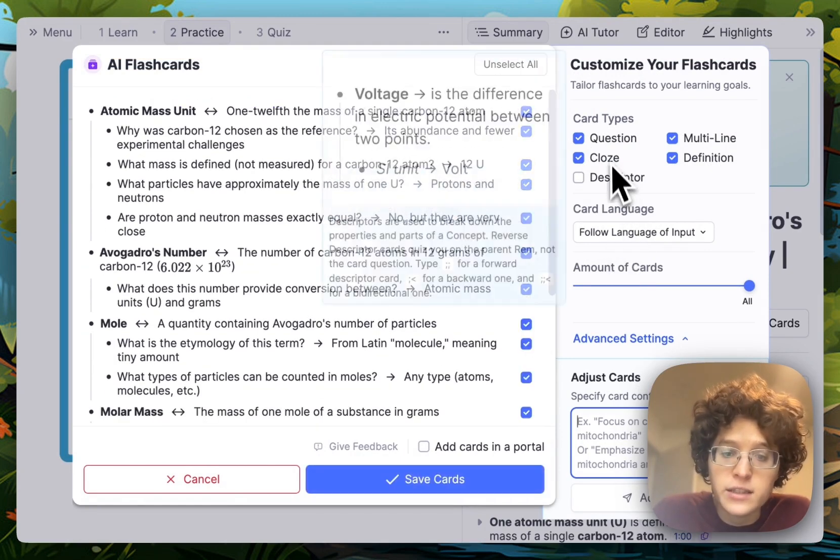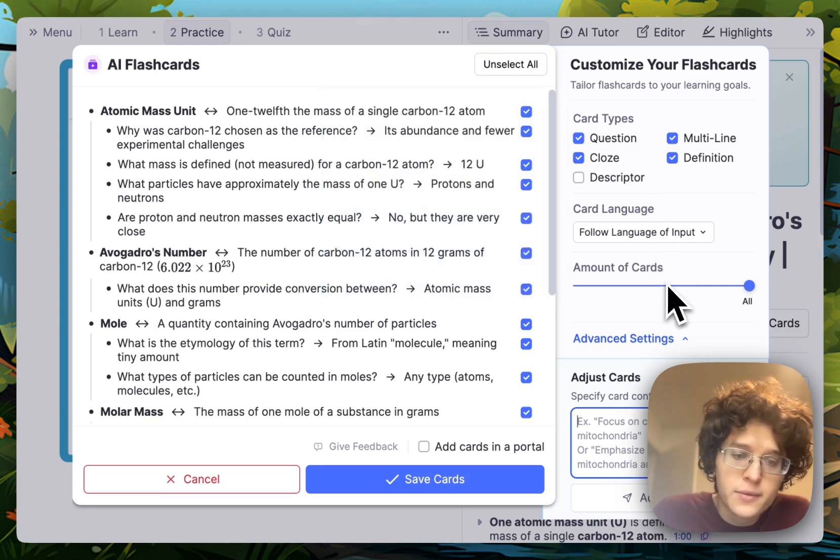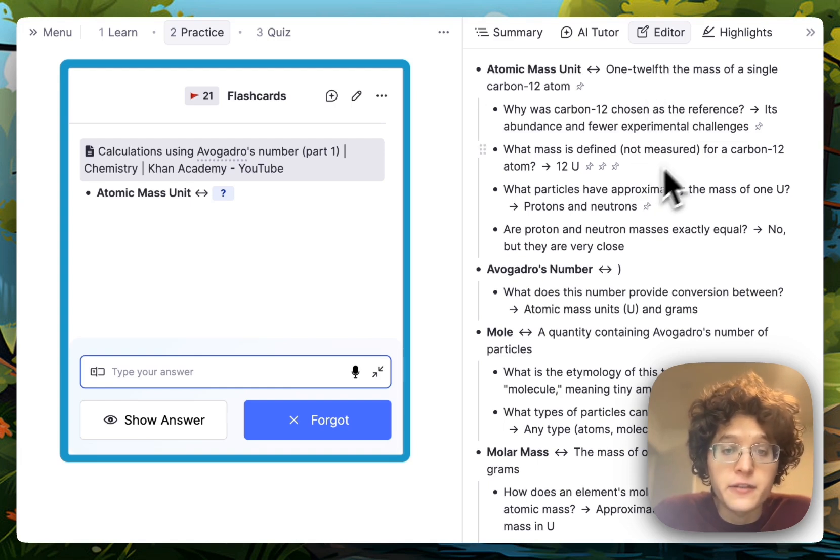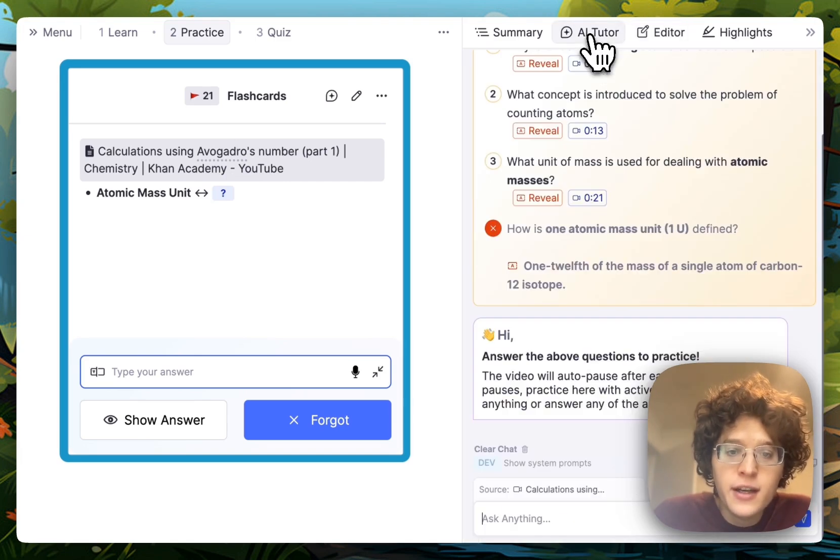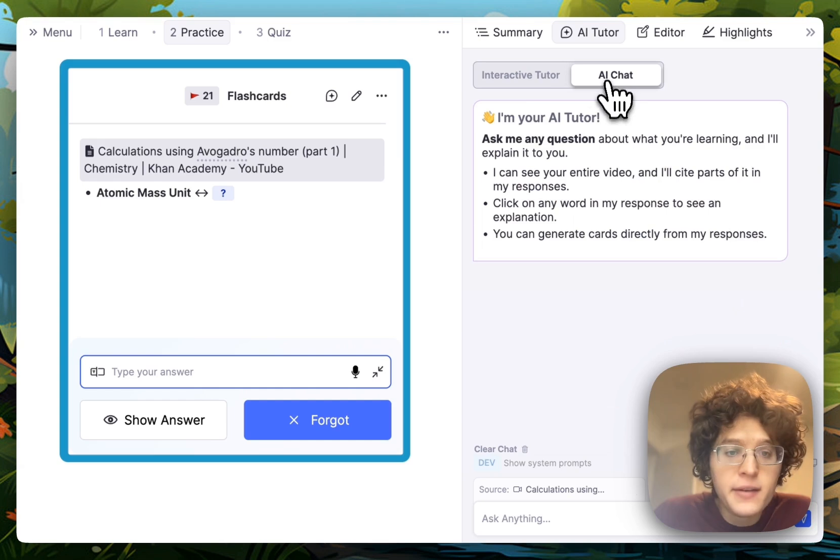You can also adjust the kind of cards, the language, the amount, or write any fine-tuned adjustment that you would like. They'll be added to your editor for any further edits, or you can immediately jump into practicing them. These cards are just normal RemNote flashcards, so you can ask the AI chat about the contents of your current card, or you can have the AI grader grade your typed in answer.